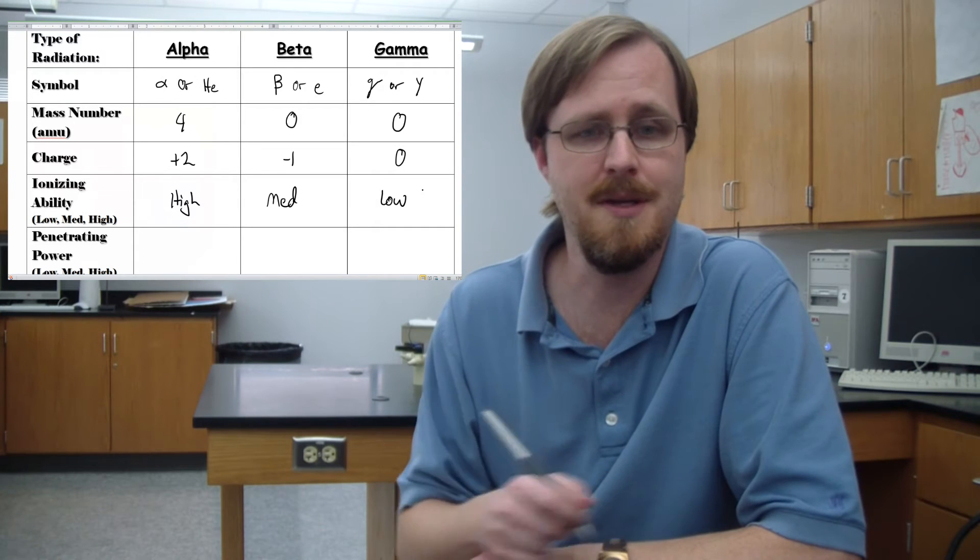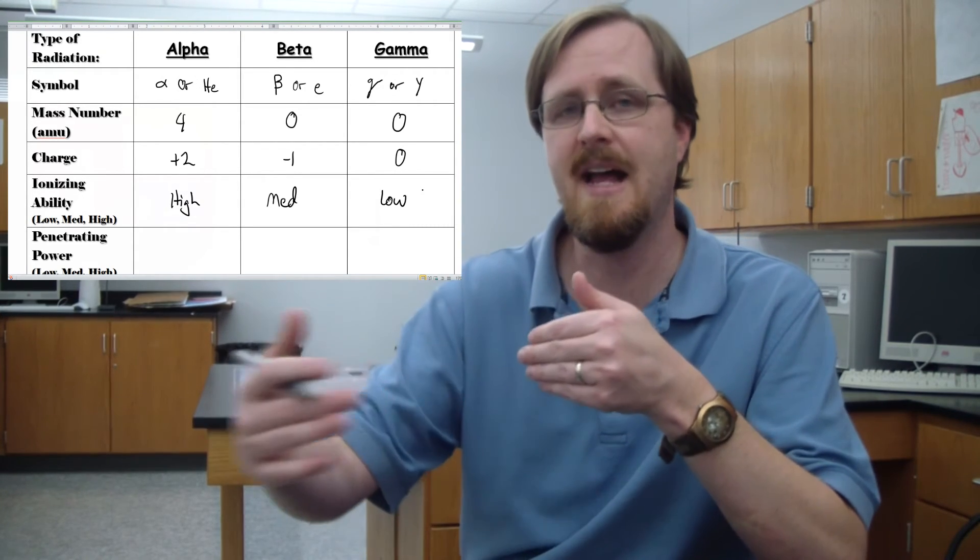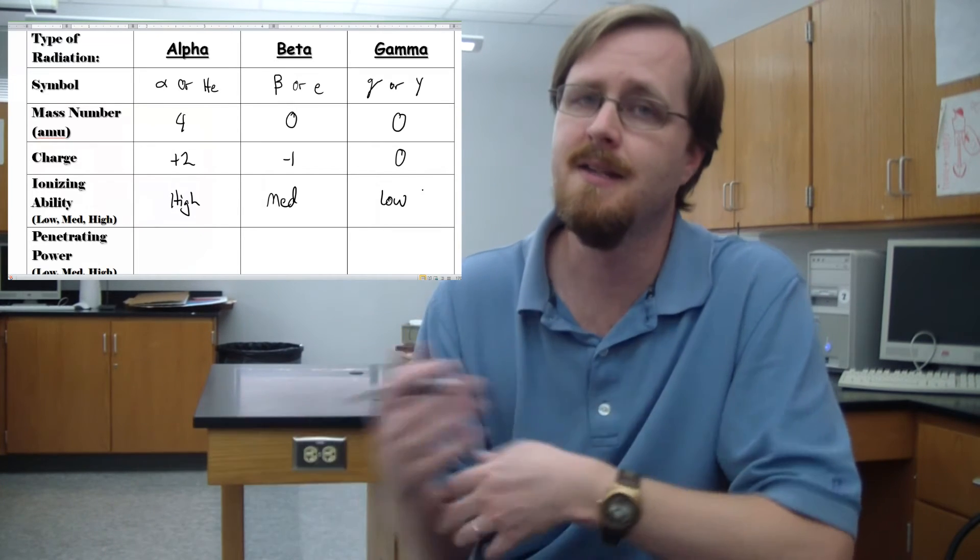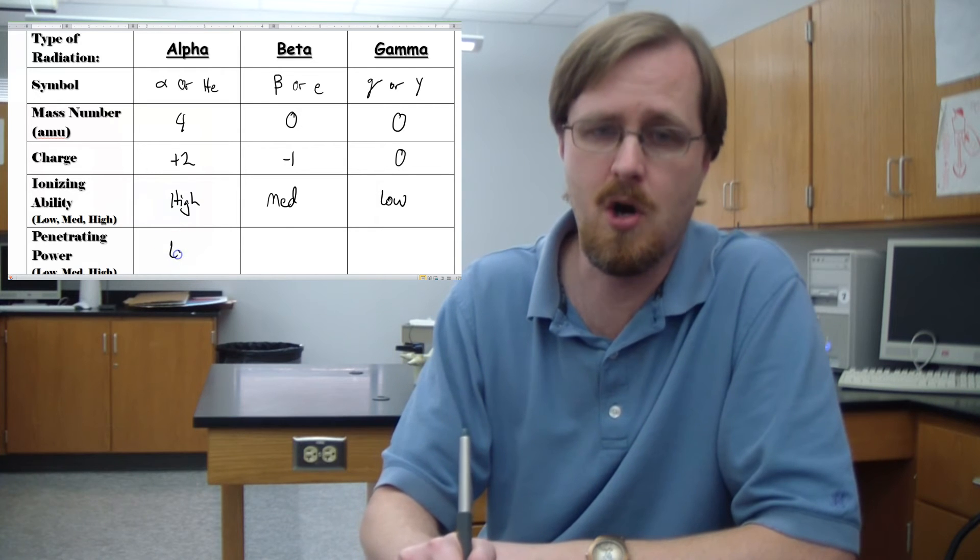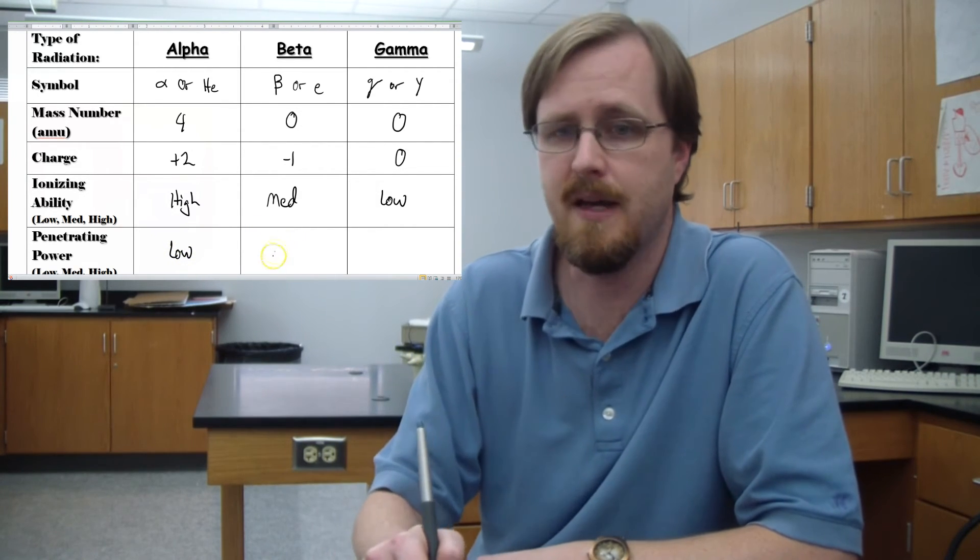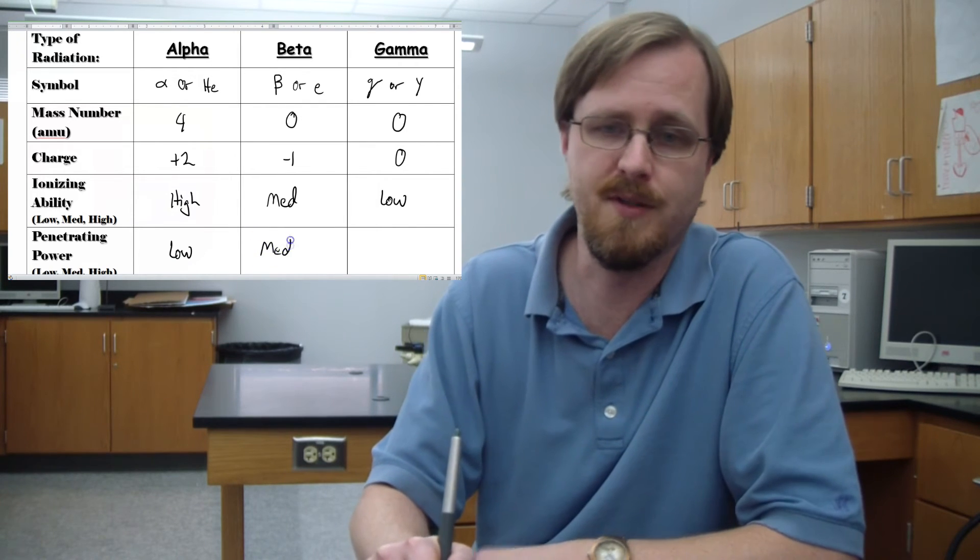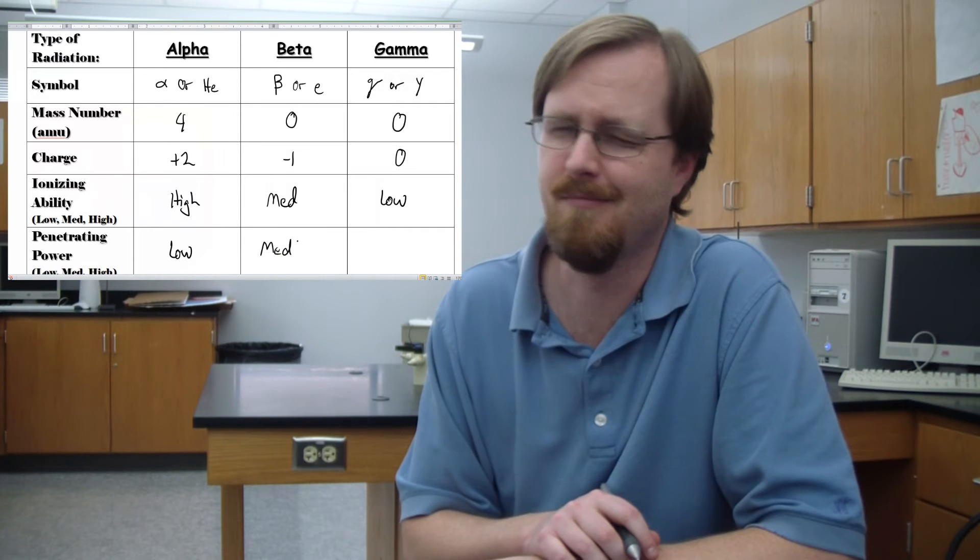However, when it comes to the penetrating power, meaning the ability of this particle to pass through other matter, it's the exact opposite. The alpha particle is the largest particle, so it's going to have the hardest time going through stuff. So that would be low. The beta particle, so once again being in the middle, and let me tell you, it is extremely medium. Medium beyond belief.